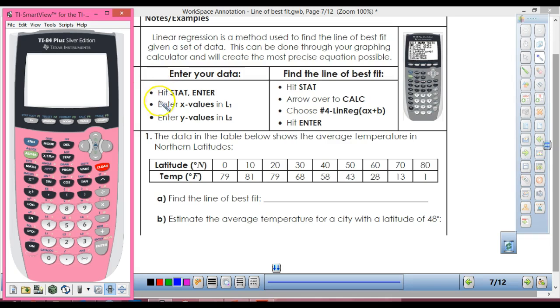So it tells us right here how to enter our data. So we're going to hit stat. This button right here, it's right below the delete. Right here, stat. And we want to edit a list, so we're going to hit enter. Now, which one's going to be our x value? Is it the latitude or the temp? The latitude, right? So we're going to enter these values into this L1 right here. So we're going zero, enter, ten, twenty, thirty, forty, fifty, sixty, seventy, eighty. That's your step in L1? Yep.